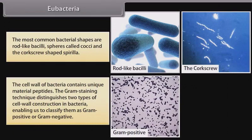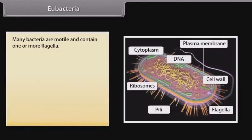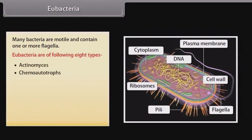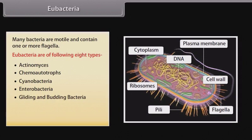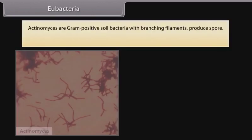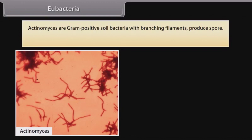The gram staining technique distinguishes two types of cell wall construction in bacteria, enabling us to classify them as gram-positive or gram-negative. Many bacteria are motile and contain one or more flagella. Eubacteria are of the following eight types: actinomyces, chemo-autotrophs, cyanobacteria, enterobacteria, gliding and budding bacteria, pseudomonas, rickettsias and chlamydeas, and spirochetes.